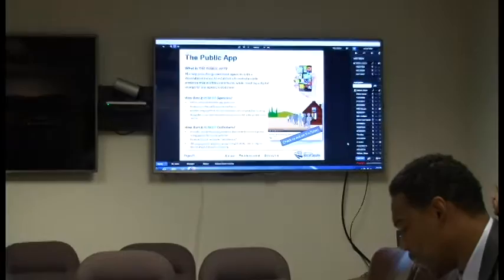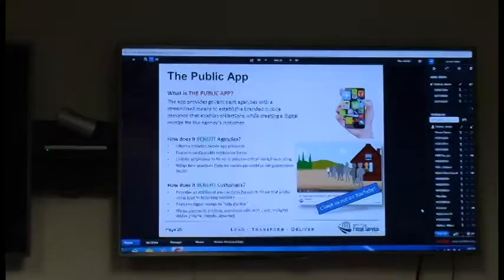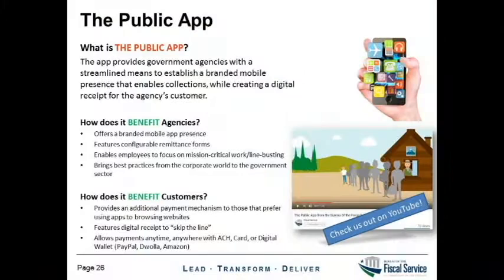The public app does two things. It provides government agencies with a streamlined means to establish a branded mobile presence and enable collections, and it creates a digital receipt for the agency's customer. This means you'll be able to offer your customer the same payment methods on Pay.gov — whether ACH, credit card, or digital wallet — but from within the app. Your customer could then save their receipt on their phone rather than having it print out. We'll also be able to share the public app promotional video. We also offer this app as a software development kit, so if your agency has a public-facing app already and wants to add a checkout page, we're here to help.